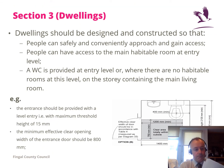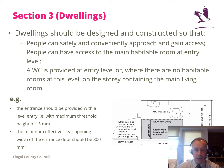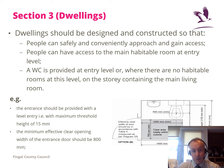Section 3 covers dwellings. It's a short section with essentially three points. First, people must be able to safely and conveniently approach and gain access — meaning level access, so you can get from your car to the building via a level approach with ramps. Second, people must have access to the main living room at entry level. Third, a WC must be provided at entry level.